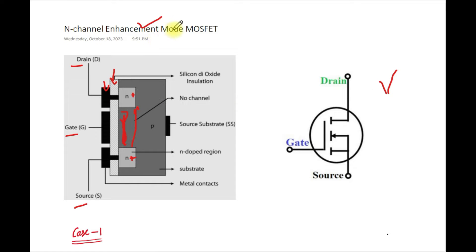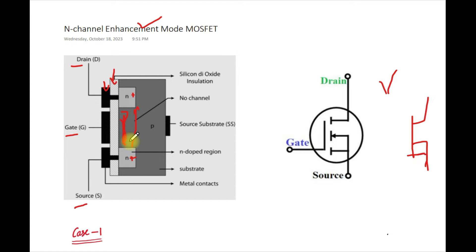This is the circuit symbol for the N-channel enhancement mode MOSFET, showing gate, drain, and source terminals. In the depletion MOSFET symbol, the line between drain and source is continuous, indicating a physical channel. Here, since there is no physical channel, the drain and source are shown as separate — there is a break in the line — reflecting the absence of the channel.